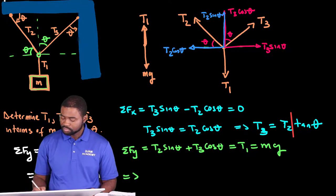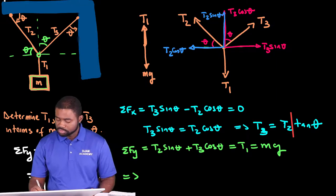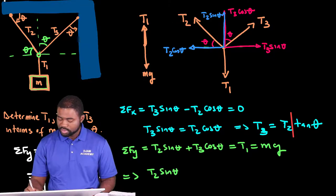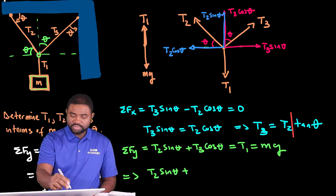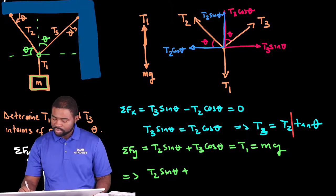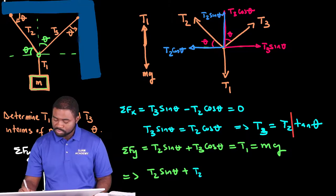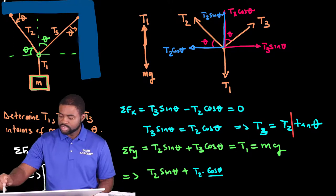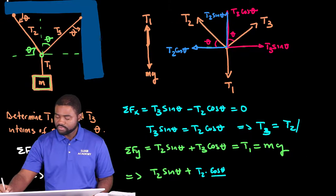So, this would mean that T2 sine theta plus T3. What is T3? T3 is T2. T3 cosine theta divided by T3. Wait a minute. This right here, sorry, is divided by tan theta, not multiplied by tan theta.